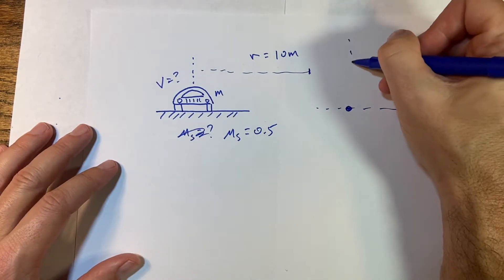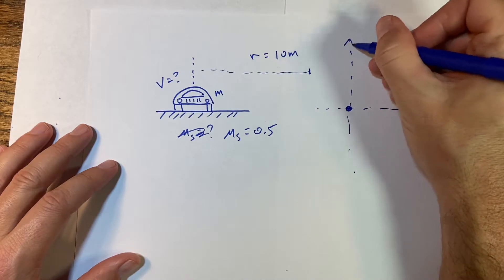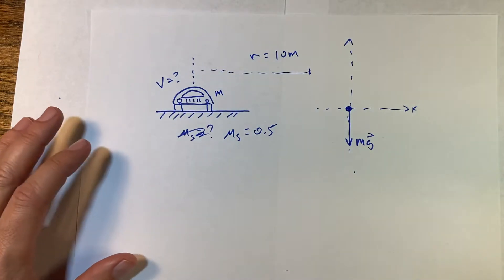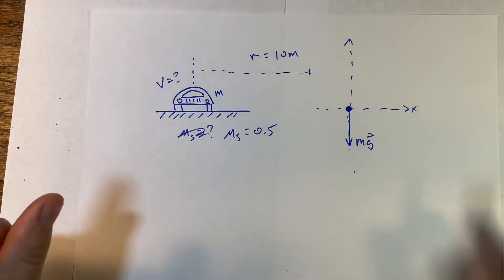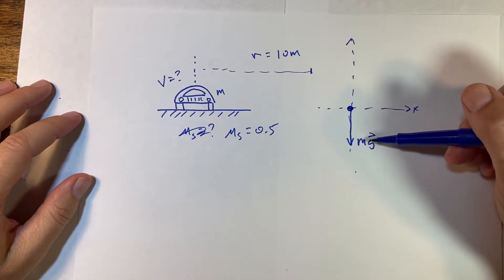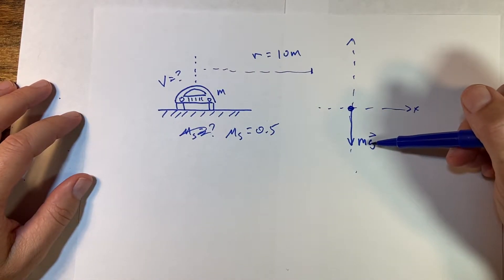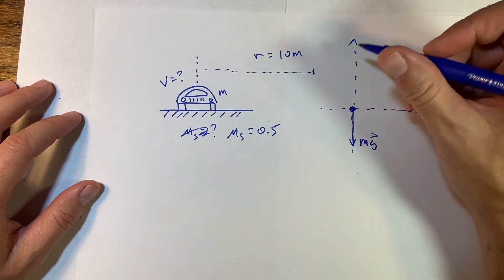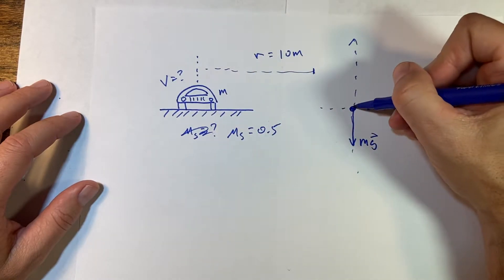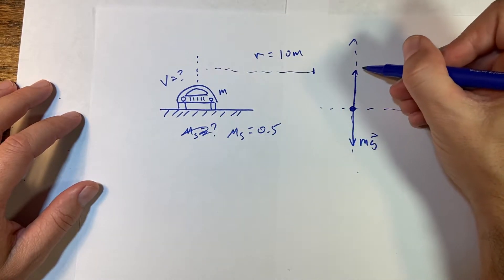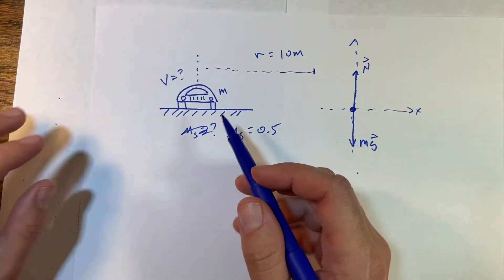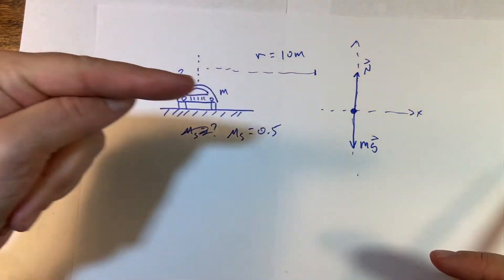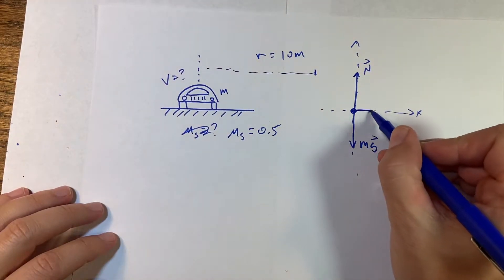We always want to think about: what are the long-range forces, and what are the contact forces? The gravitational force is the only long-range force — no electrostatic forces here. What else is touching it? The road. So the road pushes up with a normal force, and the road also has a frictional force. Since the car is turning this way, it wants to slide outward, so there's a force pushing towards the center of the circle — and that is the friction force.